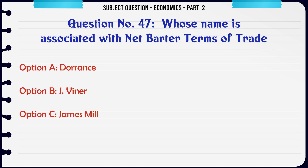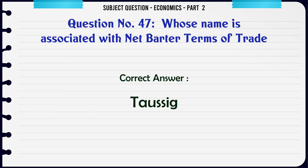Whose name is associated with net barter terms of trade? A. Dorrance. B. J. Viner. C. James Mill. D. Taussig. The correct answer is: Taussig.